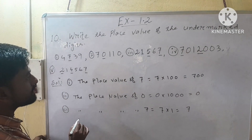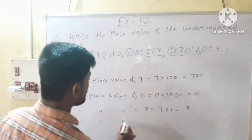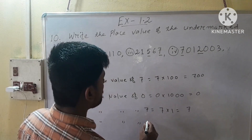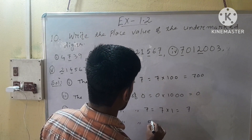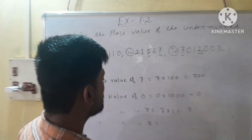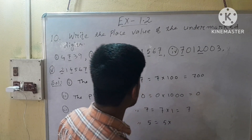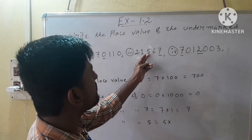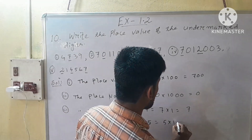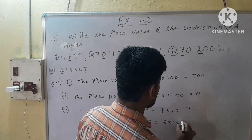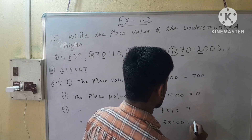Next, the place value of 5 is equal to 5 into... After 5 we have 2 digits, so after 1 here we have to put 2 zeros. So it will be 500.